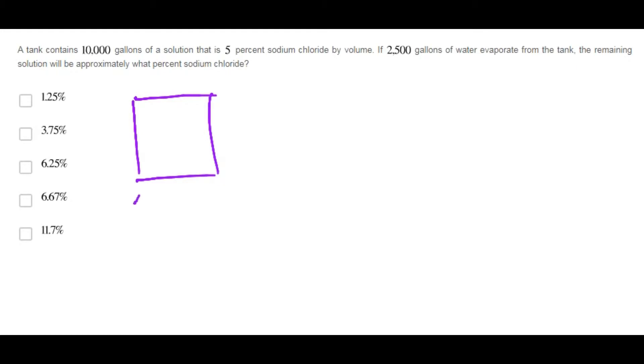So, a tank contains 10,000 gallons. Of this, 5% is sodium chloride, so 5% is 500 gallons.